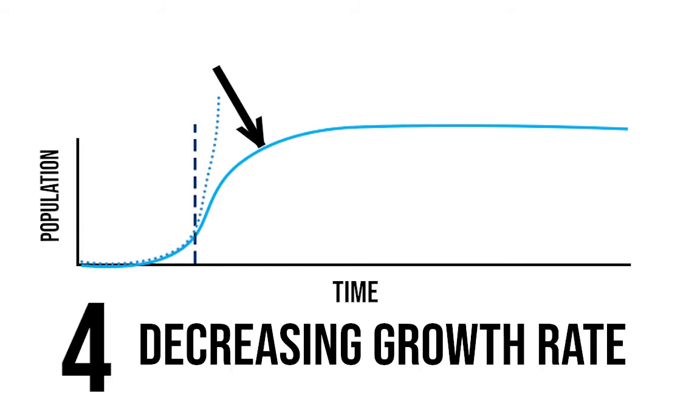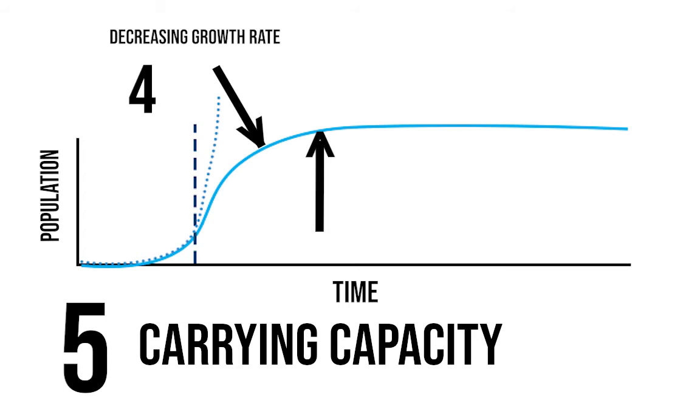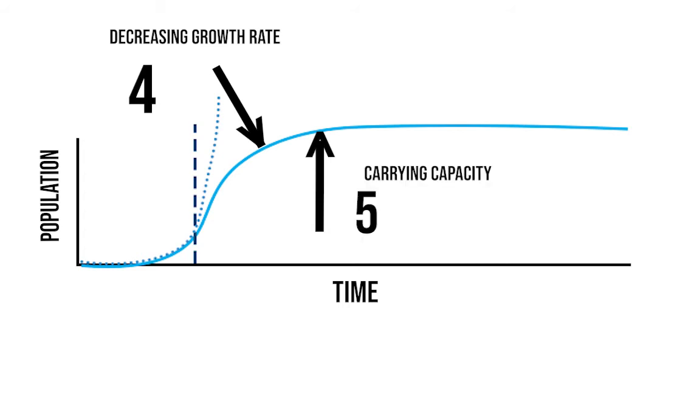Now, when you get to point four, that's the decreasing growth rate. And when you get to point five, that's the carrying capacity. Notice that four and five don't have a population difference that is that large. In fact, it's quite a small difference. The reason for that is any given environment can be assumed that it will support only a certain number of any given species. We call that the carrying capacity because it's how many individuals that environment can have the capacity to support or carry.